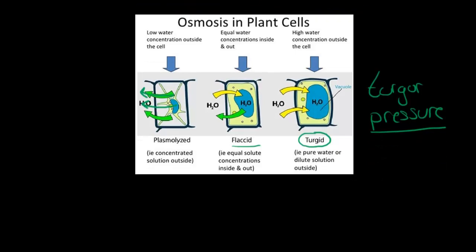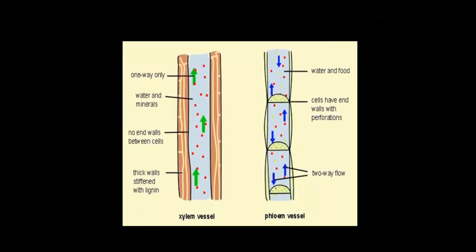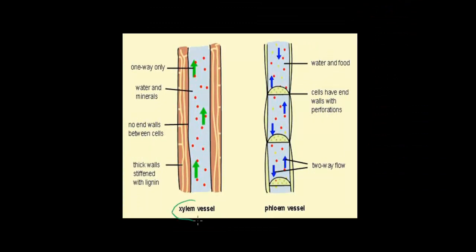Plants do not have arteries or veins but they have similar things known as xylem vessels and phloem vessels. Phloem vessels are responsible for transporting nutrients but xylem vessels are responsible for transporting water. We are going to talk about the xylem vessels and how exactly xylem vessels can transport water into different parts of the plant.